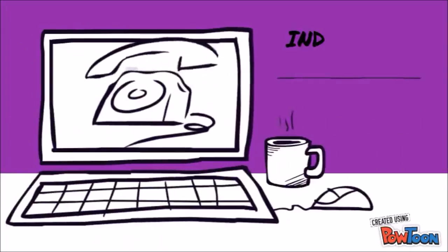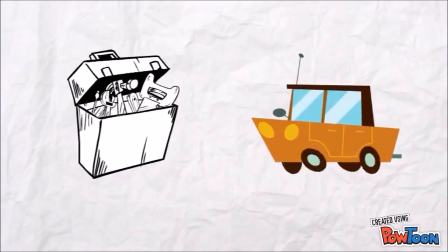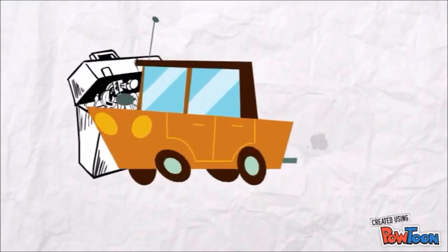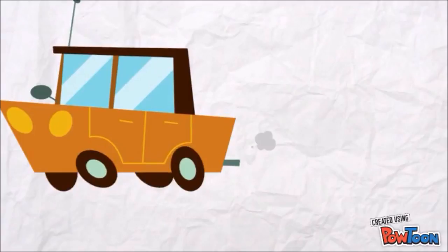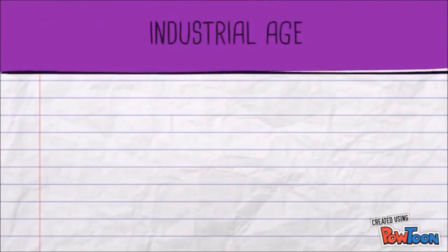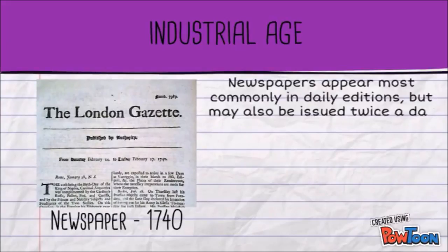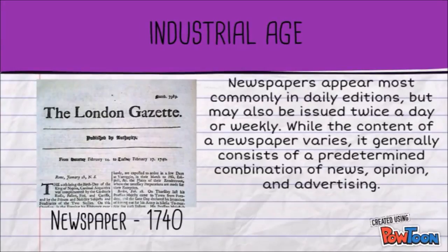The industrial age, 1700s to 1930s. This was a period that mainly replaced hand tools with power-driven machines, such as steam power and machine tools, and where iron production was established. The newspaper was one of the earliest forms of media in this period — developed in the 1740s, it is a printed periodical whose purpose is to deliver news and other information in an up-to-date, factual manner.